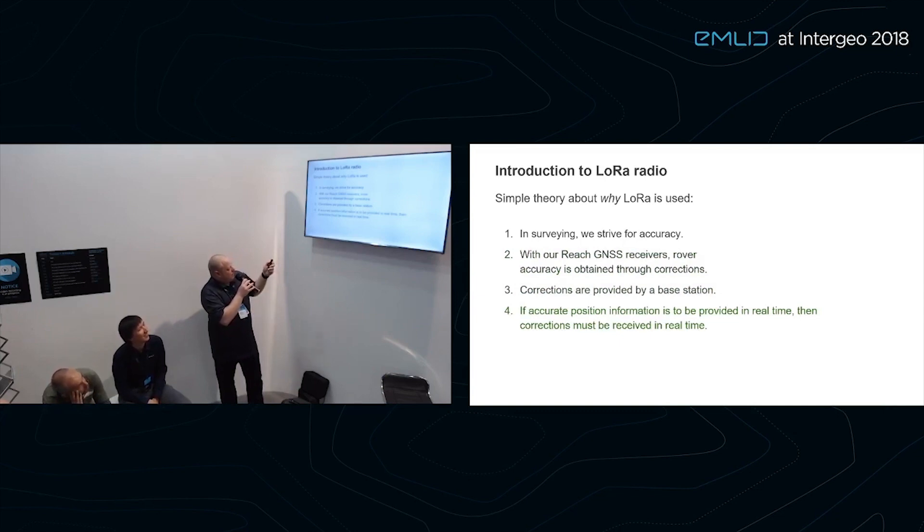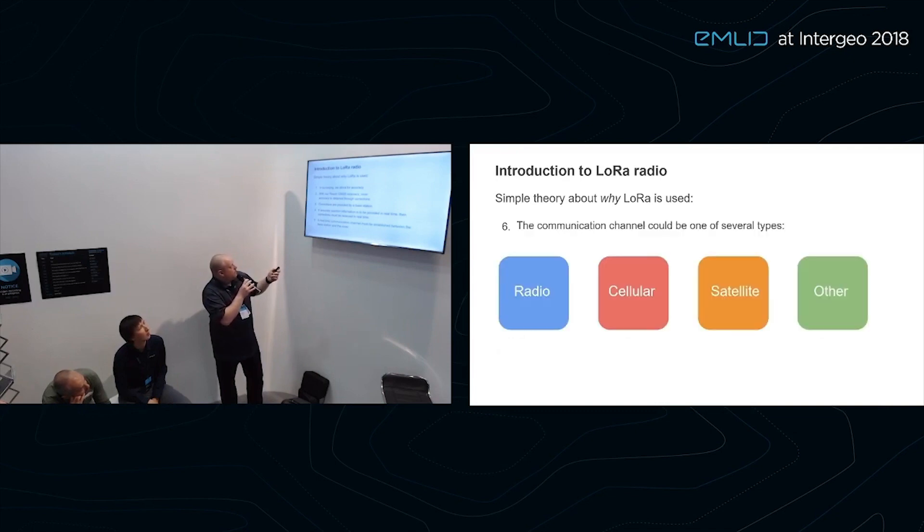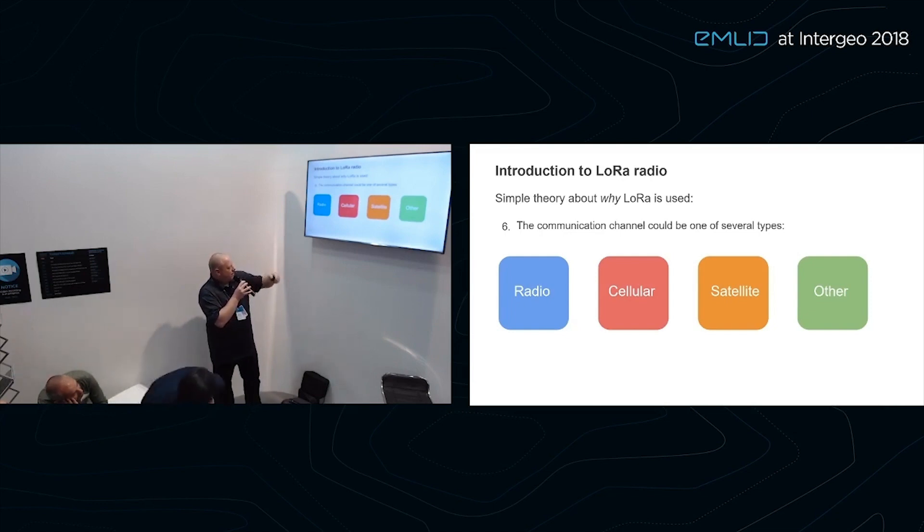If we want real-time accurate information, we need the corrections to come in real-time, and that's where the radio comes in. We need that good communication channel between the base and the rover. The communication... this is really nice, you guys. You fixed my presentation. It looks good. Thank you. So, communication, we could do radio, cellular, satellite, or other means.